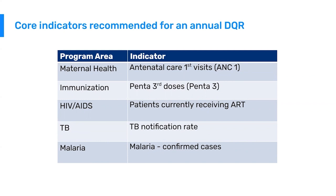The WHO recommends several core indicators for annual data quality reviews. For maternal health, they recommend antenatal care one visits. For immunization, PENTA third dose. For HIV/AIDS programs, patients currently receiving ART. For TB, the TB notification rate. And for malaria, confirmed malaria cases. These indicators are almost universally found in all country HMIS systems.